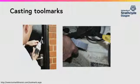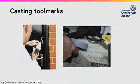At the crime scene, we must record the tool mark. The tool mark can be cast using a silicone casting material called copyright. This is capable of recording very fine details, is easy and safe to use, sets quickly and forms a stable and robust object.